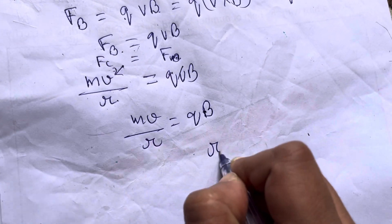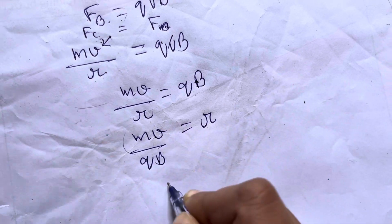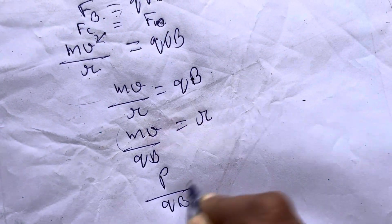If you take R to the other side, then you have M V by Q B. And M V, what is momentum? That is P. So P by Q B equals R.